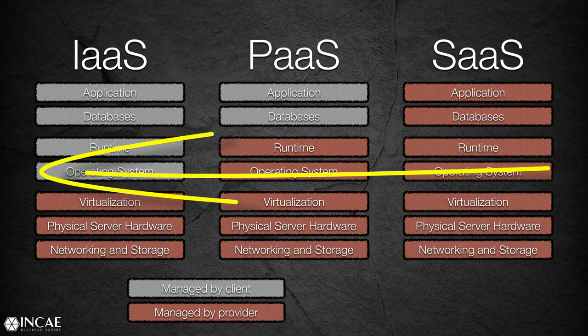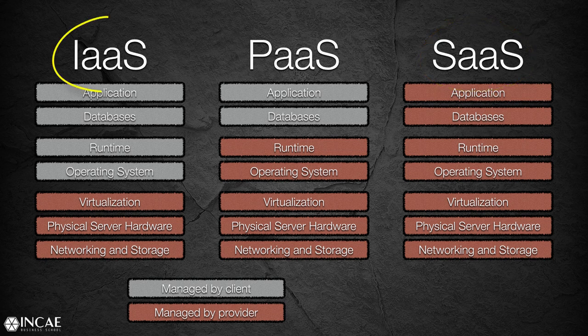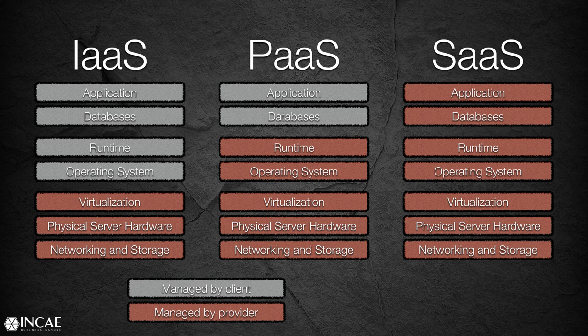Conversely, if we move towards the left, we're moving towards more standardized and commoditized offerings where prices are going to be much lower. If we're on the right side consuming a software application already up and running, that would be equivalent to going to a restaurant and ordering food that is already cooked and served. Whereas on the left, we have to build everything on our own — equivalent to going to the supermarket, choosing our ingredients, and putting everything together. It's going to be less expensive but only if we know how to cook. The different service delivery models are not one better than the other — they're just suited for different users: infrastructure for system administrators, platform for developers, and software as a service for end users who don't care about anything under the hood.